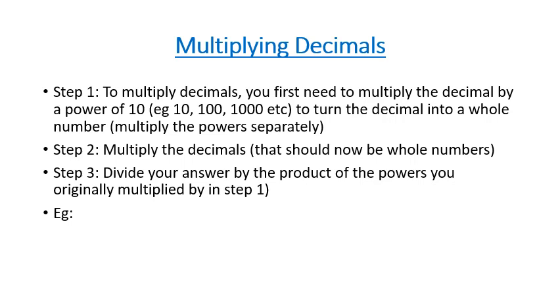I'll give you an example which might help you understand what I mean. So let's say we've got 0.4 and we want to multiply it by 0.3.